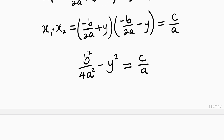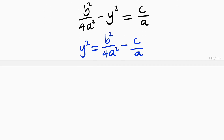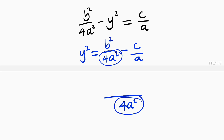Therefore, let us make y the subject. y squared will be equal to b squared divided by 4a squared minus c divided by a. The LCM between the denominators is 4a squared. If you take 4a squared and plug it into 4a squared, it goes one time, then multiply by the numerator b squared — we have b squared.